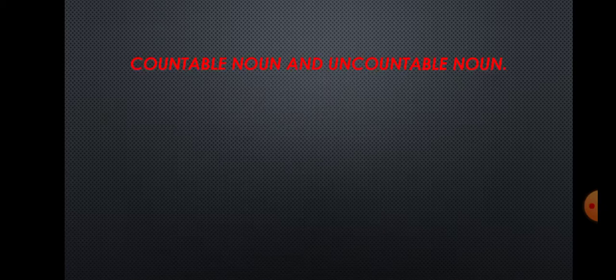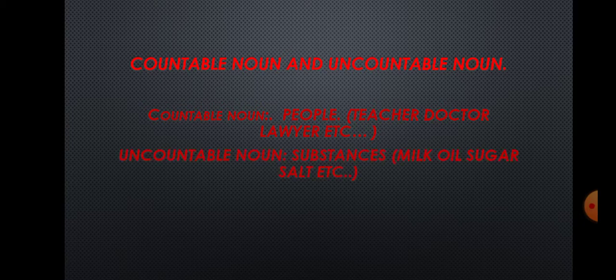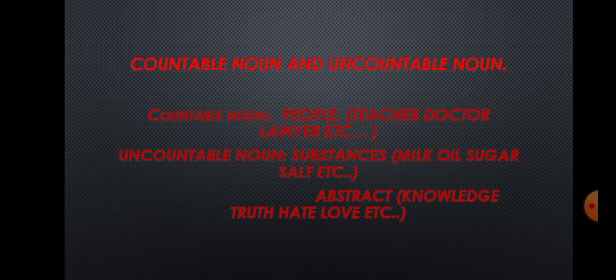Countable noun talks about people - teacher, doctor, lawyer - we can count them. How many teachers are there? How many doctors are there? Uncountable noun is for substances first - milk, oil, sugar, salt, etc. There are so many things we can't count. Then there are abstract things - abstract means we can't touch but we can feel - like knowledge, truth, hate, love. This is what uncountable noun means: substances and abstract things.